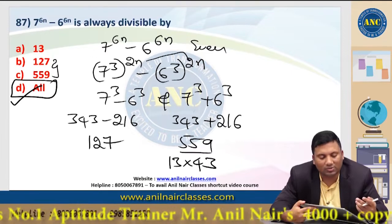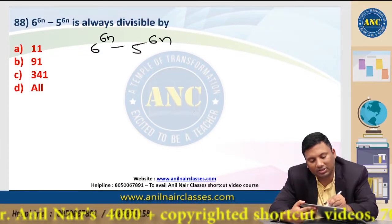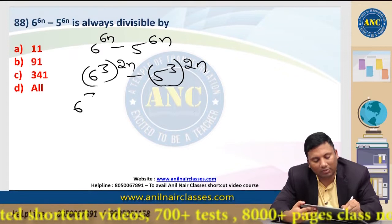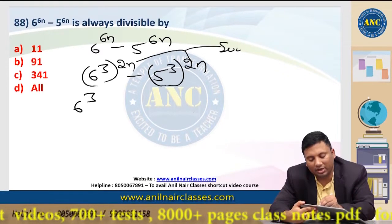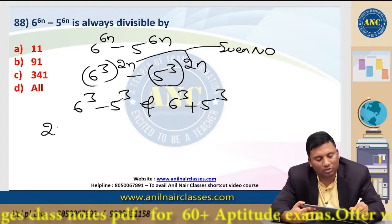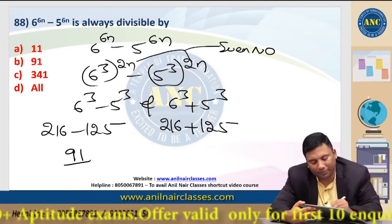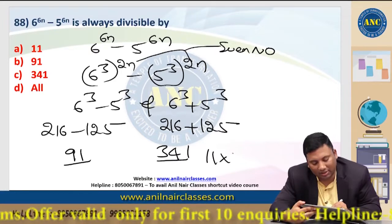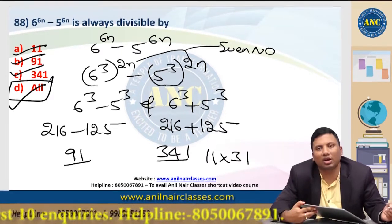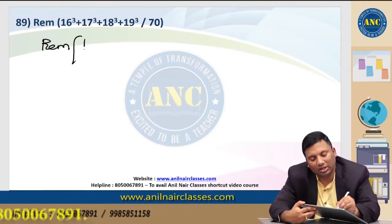559 = 13 × 43, so the answer includes all these factors. Next: 6^(6n) minus 5^(6n) = (6^3)^(2n) minus (5^3)^(2n). Since 2n is even, it is divisible by (6^3 - 5^3) = 216 - 125 = 91, and (6^3 + 5^3) = 216 + 125 = 341. 341 = 11 × 31, so the number is divisible by all these factors.